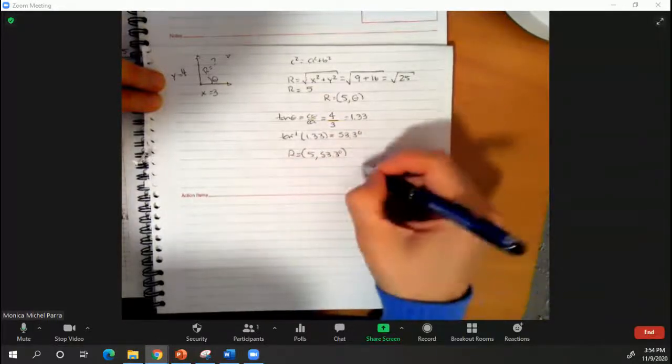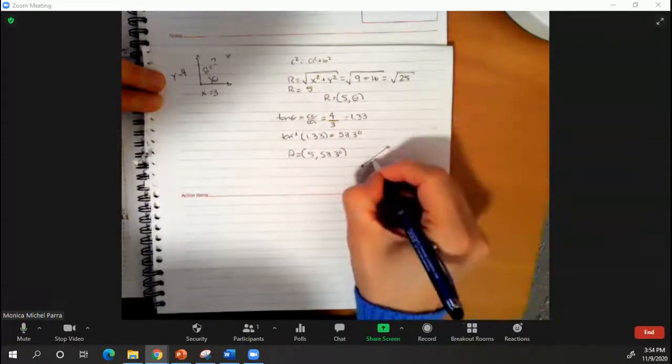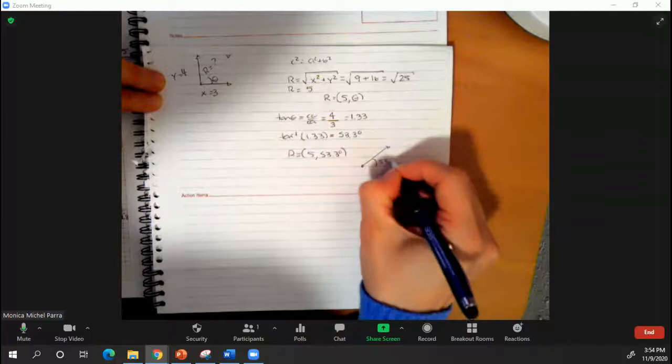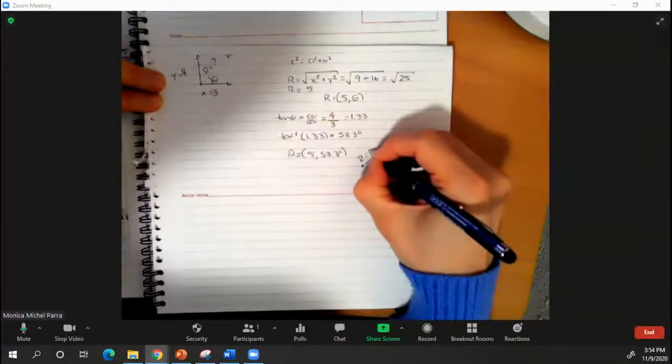What this is indicating is a value of a resultant that is aligned this way, going up and to the right, 53.3 degrees and the size is going to be equal to 5.